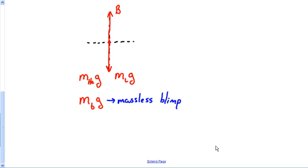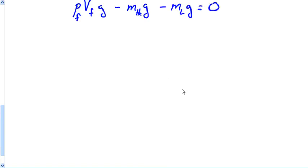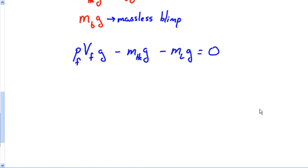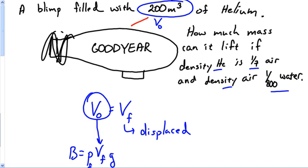It's a typical buoyancy question. The equation is: ρ_f × V_f × g − m_helium × g − m_lift × g = 0, since we're not accelerating. Since the blimp is submerged, V_fluid = V_blimp, so the only volume in this problem is 200 m³.